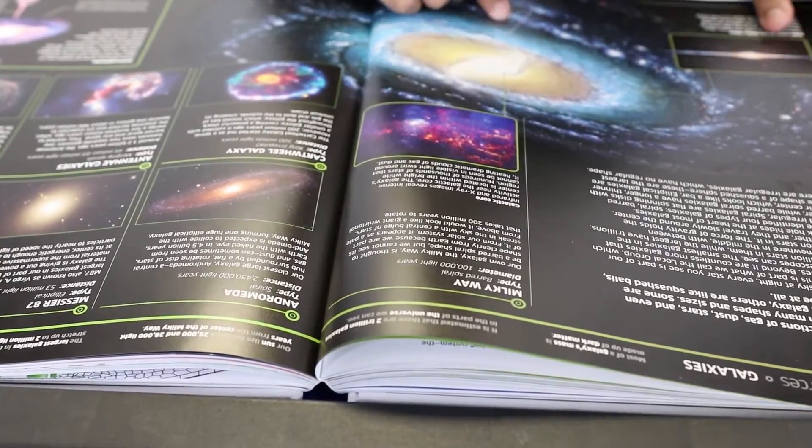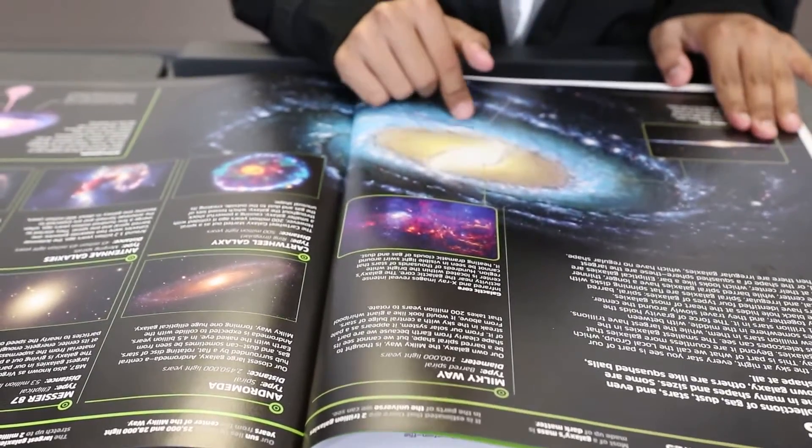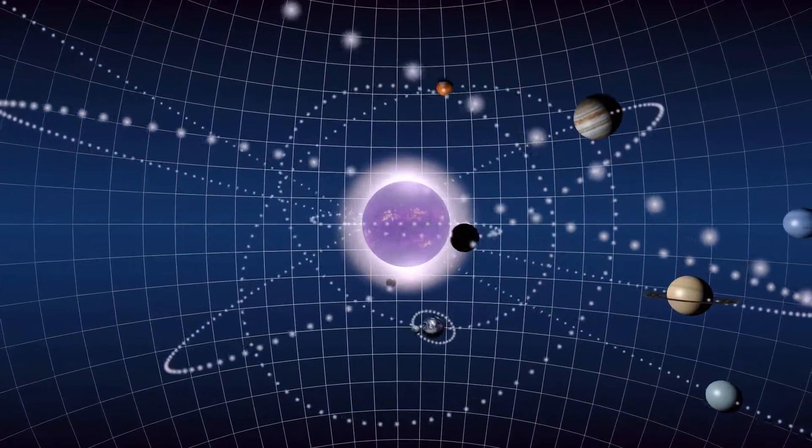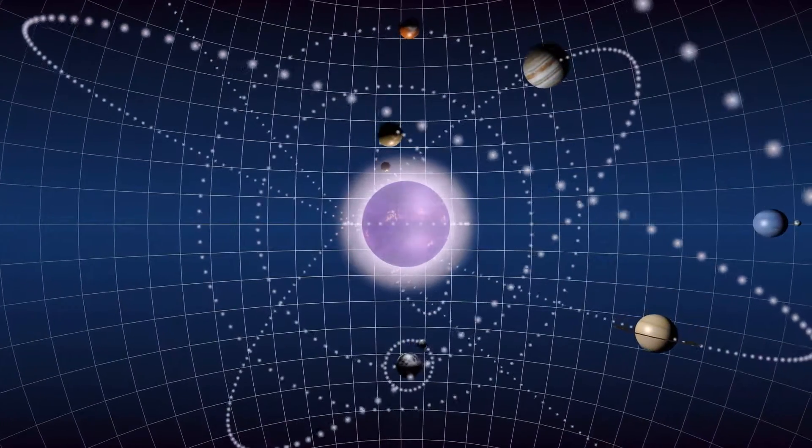And this is where we are, our solar system. Our solar system is in a minor spiral arm called the Orion arm.